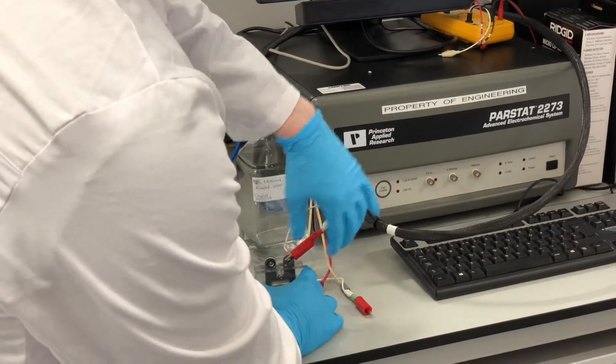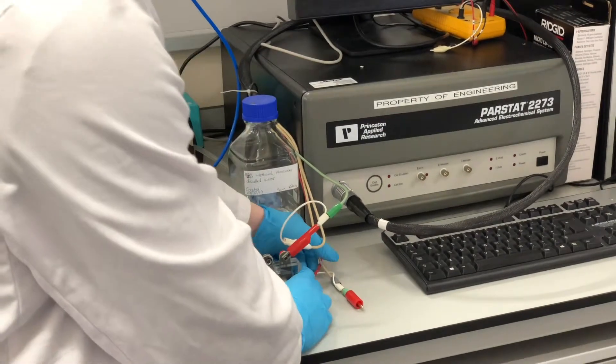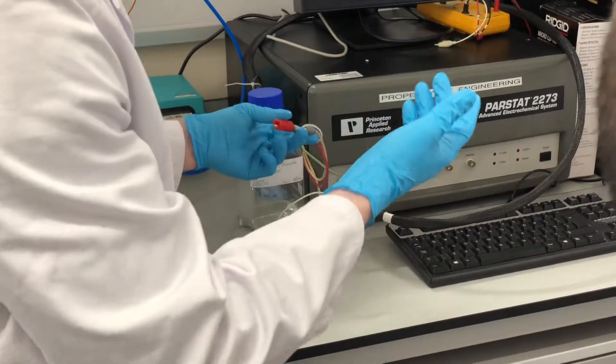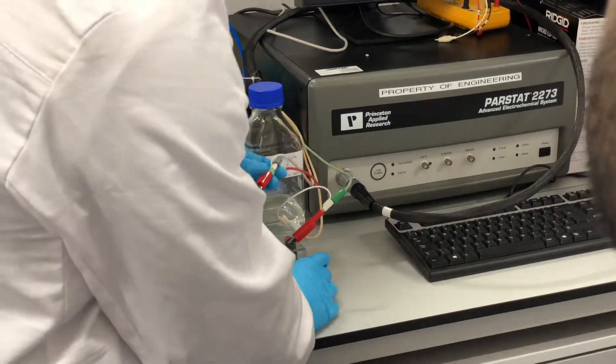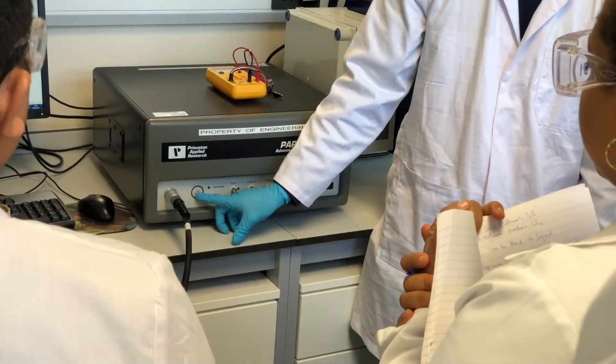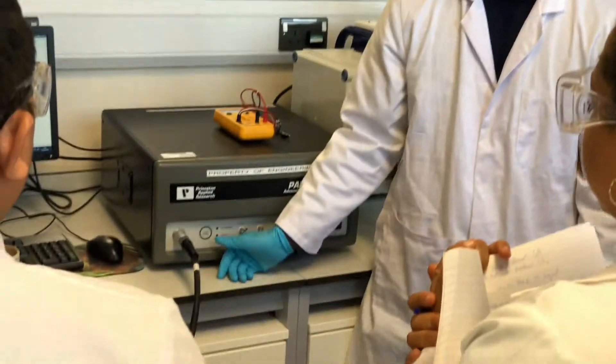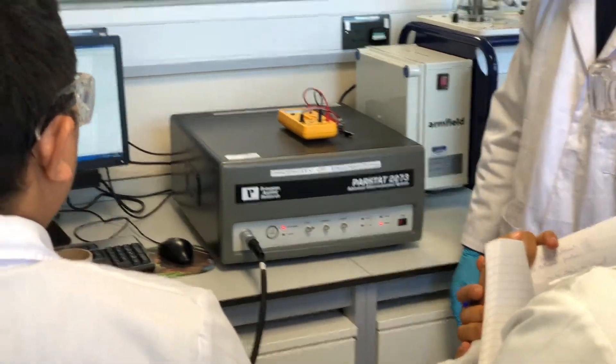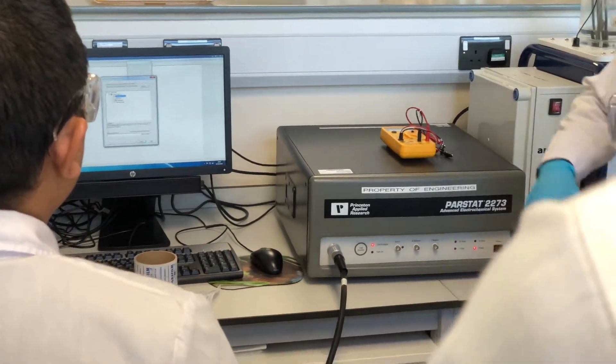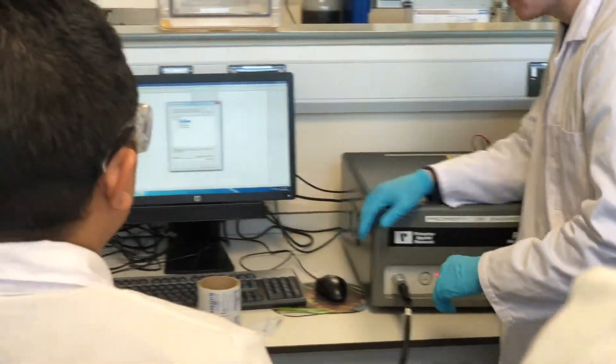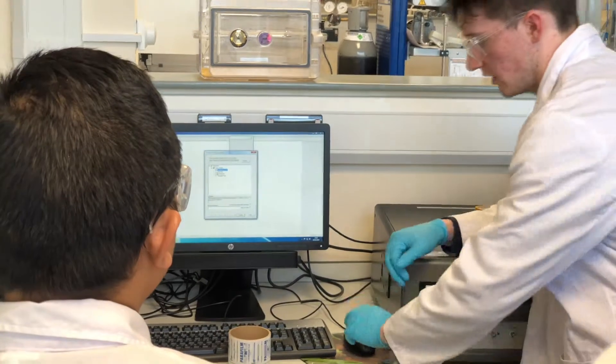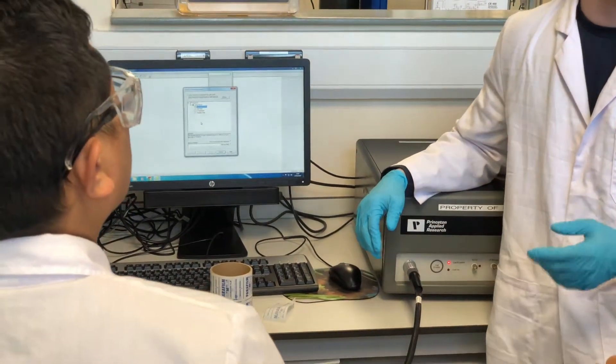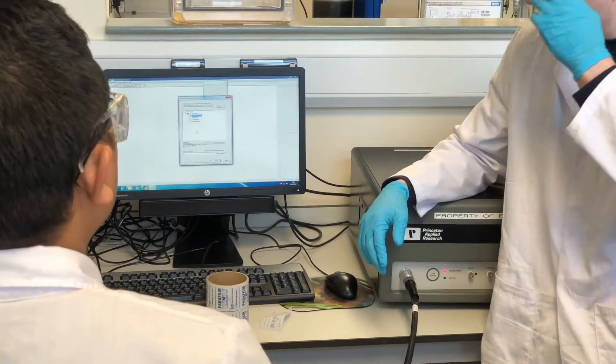A lot of time I forget what one's anode and what one's a cathode but an easy way to figure it out is once you get a reading, if you've got a negative voltage then you can switch it around here. It's a cell enable and it just makes sure that the power stats actually talking to the fuel cell that we're using and it should light up. And then on our software PowerSuite what we're doing is we've got lots of different templates and experiments that you can perform on PowerSuite.